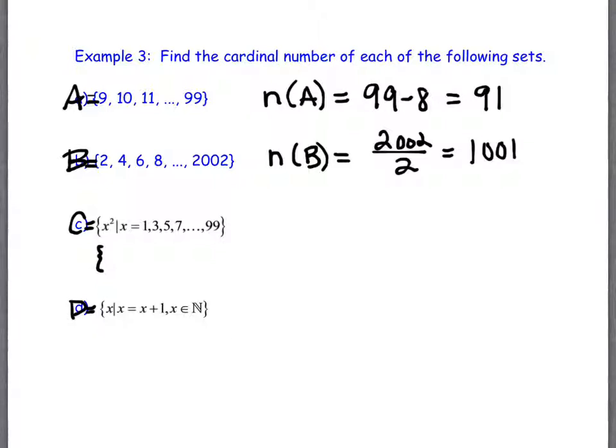So x can be each one of these numbers, and then we're going to take that number and we're going to square it to get the elements of our set. So the elements of our set here are actually what? 1 squared, which would be 1, and then 3 squared, which would be 9, and then 5 squared, all the way up to 99 squared.